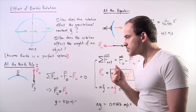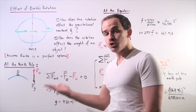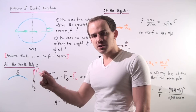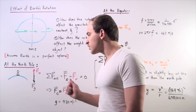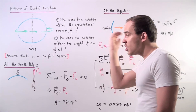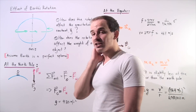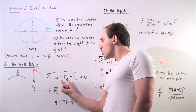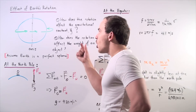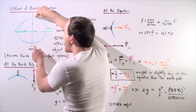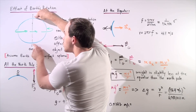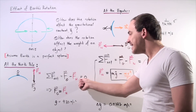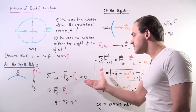We have two forces acting on the person: the force of gravity, which is acting downward — let's choose that to be the positive direction — and the normal force created by the scale on the person, pointing in the opposite direction, acting along the negative direction. According to Newton's second law, the net force is Fg minus the normal force. Now notice, as the Earth rotates, it's not actually rotating at the poles, so the person does not have a centripetal acceleration there. That means this equals m times zero, so the net force equals zero.